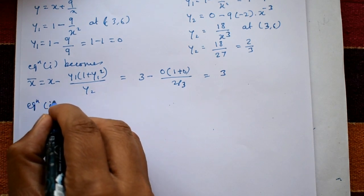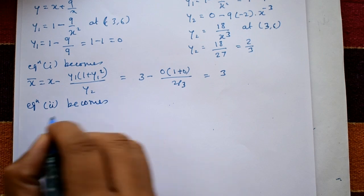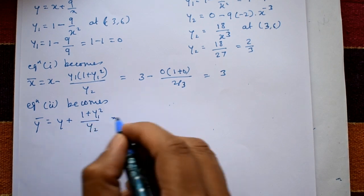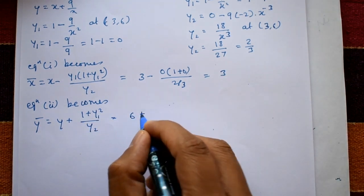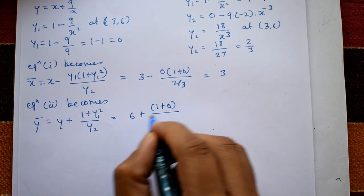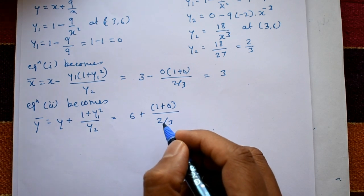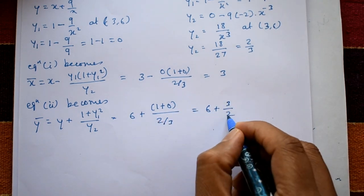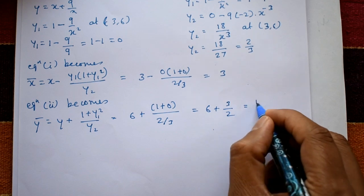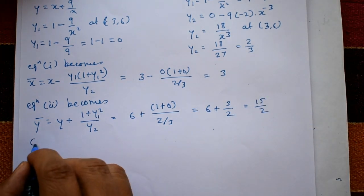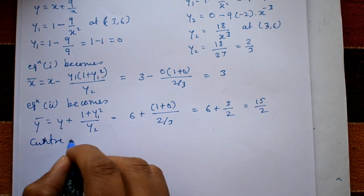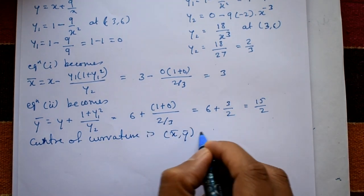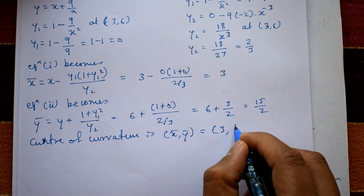Using equation 2: ȳ = y + (1 + y1²) / y2. Substituting: y = 6, y1 = 0, y2 = 2/3. So ȳ = 6 + (1 + 0) / (2/3) = 6 + 3/2 = 12/2 + 3/2 = 15/2. The center of curvature is (3, 15/2).